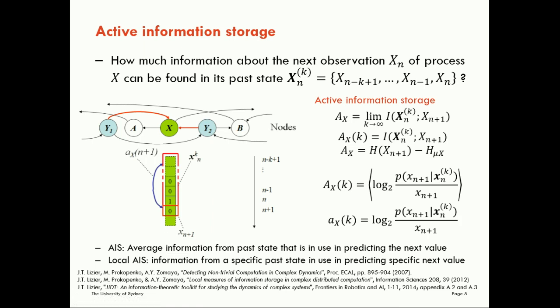We can also write it down in terms of the log ratio of probabilities here as we can for any mutual information term. We can write it down as a posterior probability of the next value given the past state versus the prior probability of the next value looked at on its own.